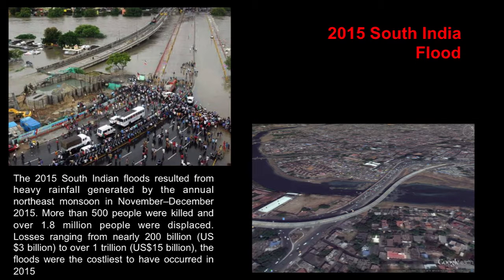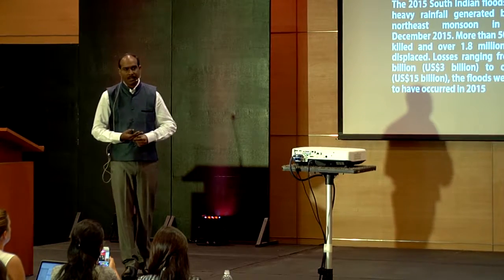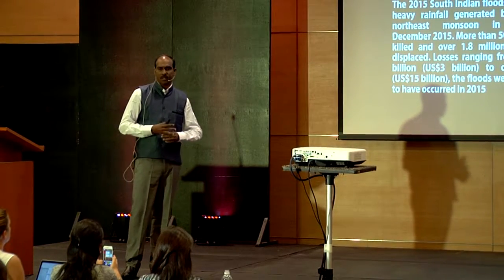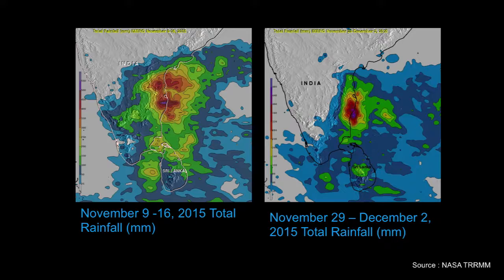In 2015, there was a huge flood in South India. It caused huge damage and a lot of people suffered. The death toll was relatively low, however it totally devastated the area because of two consequences — continuous heavy rainfalls.